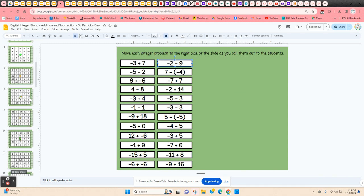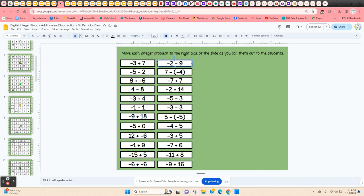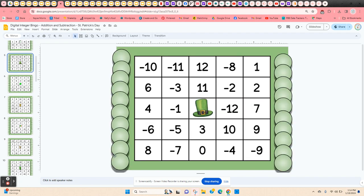I give the students editing rights so they can scroll up and down, find the bingo card that they want, and I instruct them to just click in one of the chips and then type their name or initials. That way students know that this board has been claimed and they need to find another one.